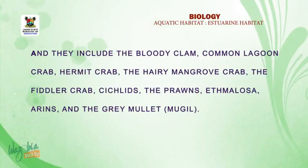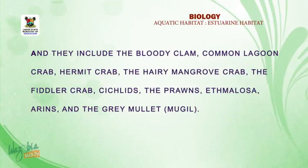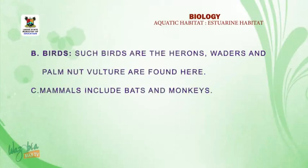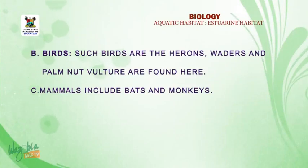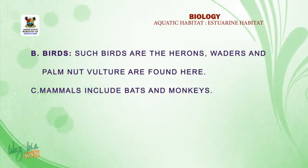All these are examples of animals found in the estuary. Another group of animals are birds. Examples of birds that can be found here include herons, waders, and palm-nut vulture. For mammals, we have bats and monkeys.